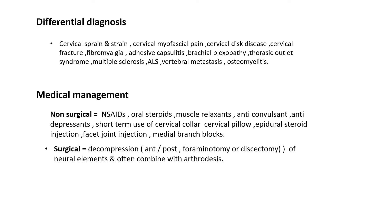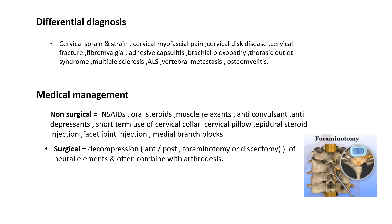In surgical treatment, decompression of the compressed neural elements is performed using either anterior or posterior approaches, and sometimes combined with arthrodesis of the patient's joint. Two types of operations are commonly performed: foraminotomy and discectomy. There is an image showing foraminotomy, where the pinched nerve has been decompressed by widening the intervertebral foraminal area.